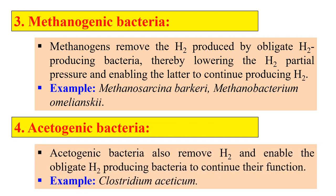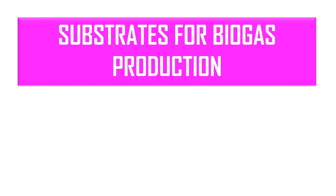The next group is acetogenic bacteria. They oxidize hydrogen by reducing CO₂ to acetic acid, which is then used by methanogens to generate methane, carbon dioxide, and hydrogen. Thus, acetogenic bacteria remove hydrogen and enable the obligate hydrogen producing bacteria to continue producing hydrogen.